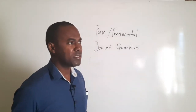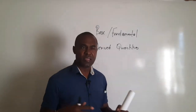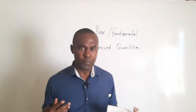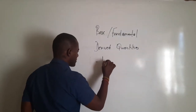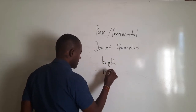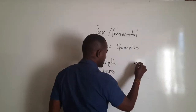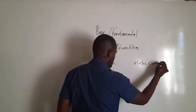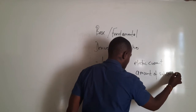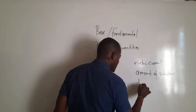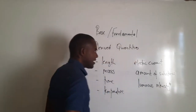There are seven fundamental or base quantities. At the CSEC level you may have been introduced to six, but there is a seventh which is not often used at this level. For completeness, we will state all seven. The seven fundamental quantities are: length, mass, time, temperature, electric current, amount of substance, and — last but by no means least — luminous intensity. These are the seven fundamental or base quantities.